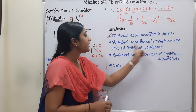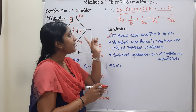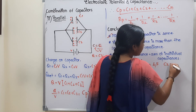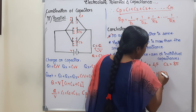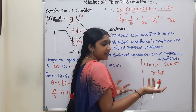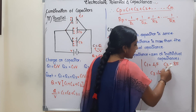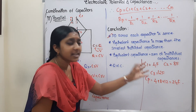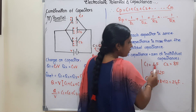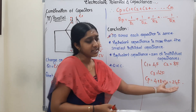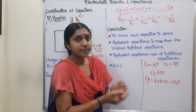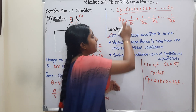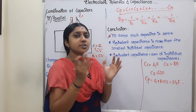In parallel, Cp is more than the individual capacitance. Let's verify: C1 = 4F, C2 = 8F, C3 = 12F. Cp = C1 + C2 + C3 = 4 + 8 + 12 = 24F. Comparing 4, 8, 12 with Cp = 24 — the equivalent capacitance in parallel is greater than all individual capacitors.